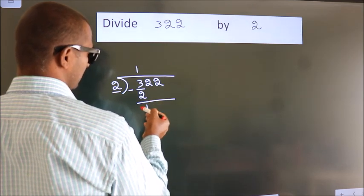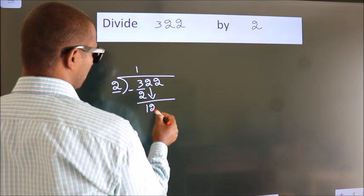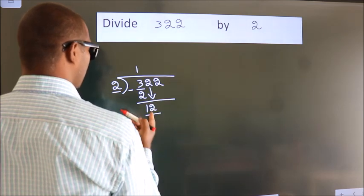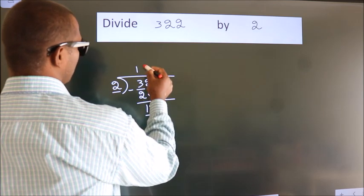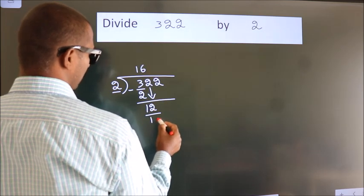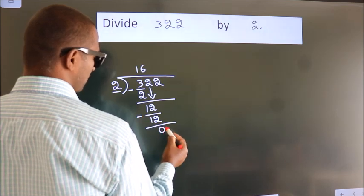After this, bring down the beside number. So, 2 down. So, 12. When do we get 12? In 2 table, 2 times 6 is 12. Now we subtract. We get 0.